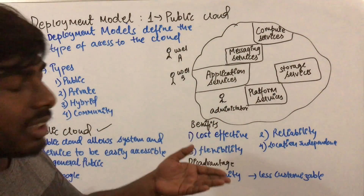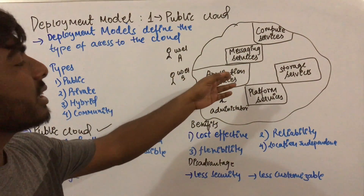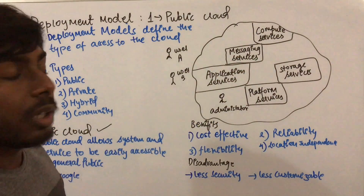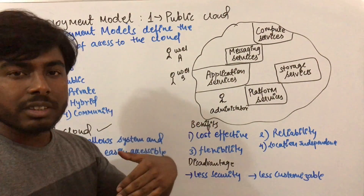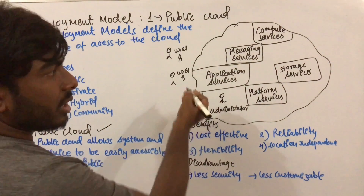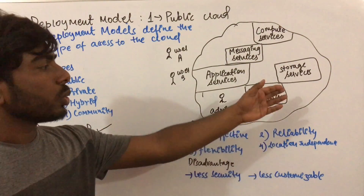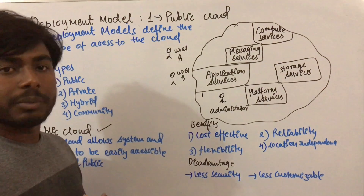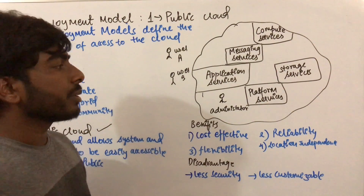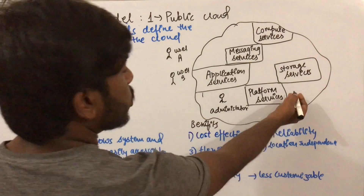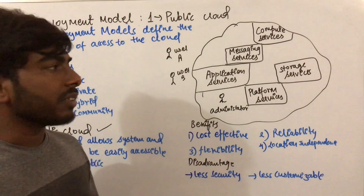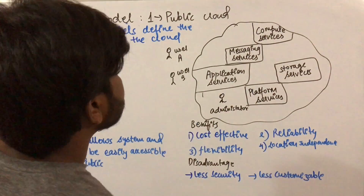Messaging services — suppose Gmail. Gmail is the messaging service of Google. Application services are the services which are directly presentable to the user, so these are application services. Storage services are the services through which data or content are stored on a data server. Platform services include network operating system — these are the services that come under platform services.